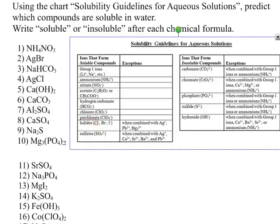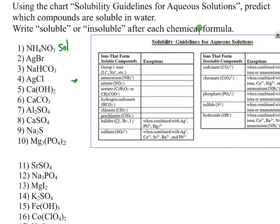For example, NH4NO3 — this substance is called ammonium nitrate. Anything with ammonium is soluble, no exceptions. So we don't even have to look at the nitrate to know the rule. This is soluble, and we would write soluble — it is aqueous.